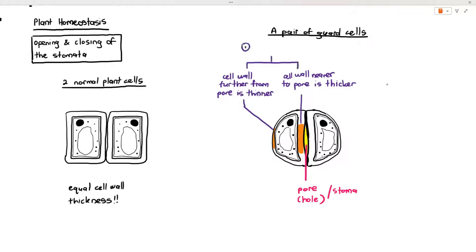Right off the bat the guard cells have this rather odd characteristic compared to normal plant cells. In the normal plant cells the cell wall work equal no matter where you looked at it, but for the guard cells they have an uneven cell wall thickness where it's thicker nearer to the pore and thinner away from the pore. There is a reason for this and you must know this for the exam.